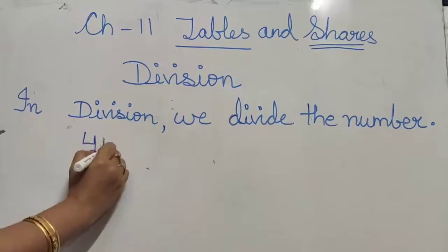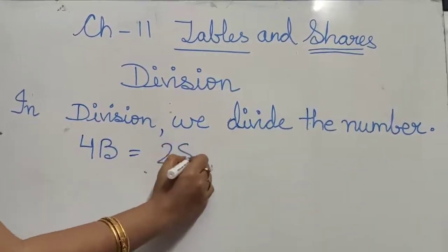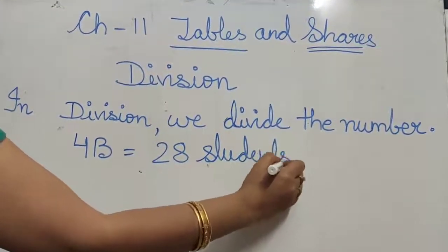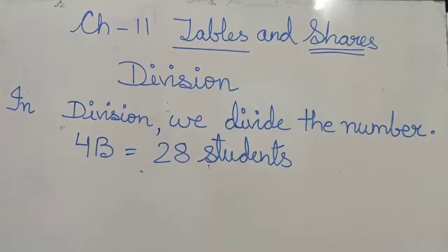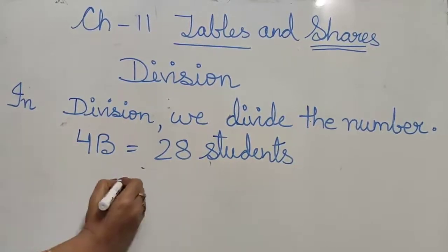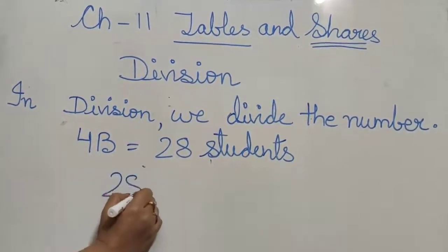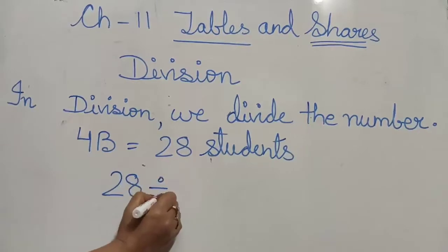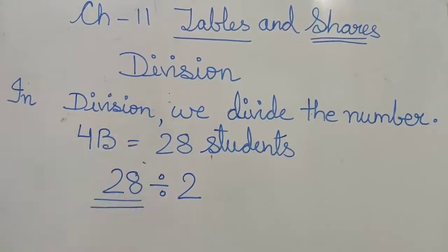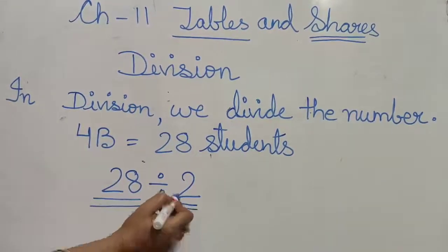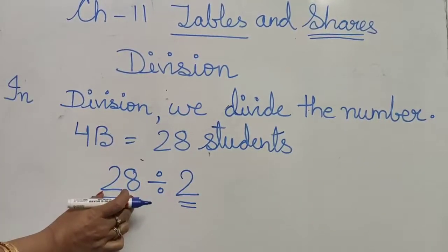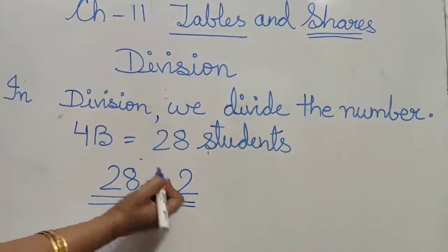For example, in class 4B, there are 28 students. These 28 students have gone for their games period and they want to divide their team in two groups. So what will they do? They will divide 28 by 2. 28 is the number of students in their class. From where have we got this 2? These are the two groups in which they want to divide the number.